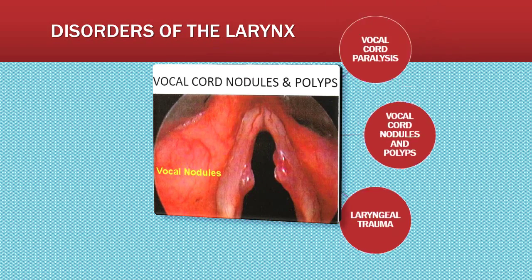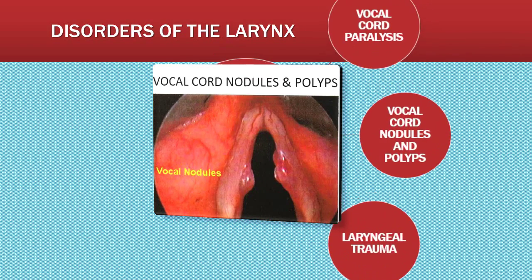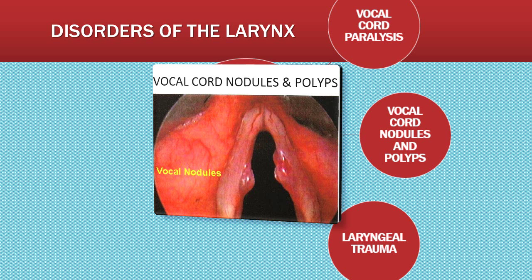Vocal cord paralysis may come from injuries, trauma, or disease affecting the larynx, the laryngeal nerves, or the vagus nerve. Prolonged intubation may cause a temporary vocal cord paralysis. It is rarely permanent. Vocal cord nodules are enlarged fibrous tissues caused by infectious processes or overuse of the voice.